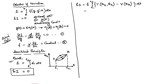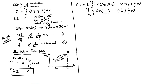We can write the action integral from t1 to t2 with L = T(q_k, q̇_k) minus the potential energy V(q_k), integrated from t1 to t2. We can take the first variation inside, giving us the integral of (δT minus δV) dt. We can expand this term.